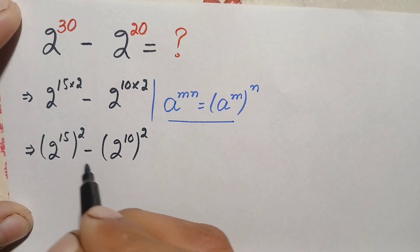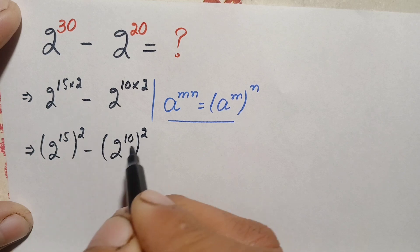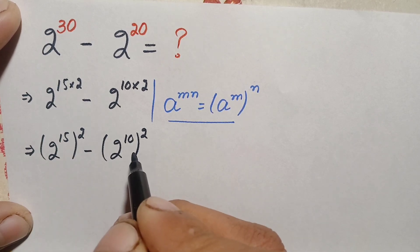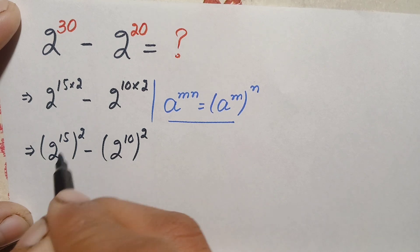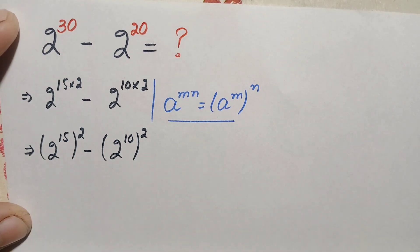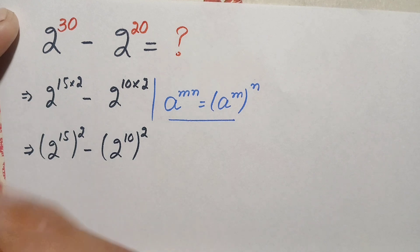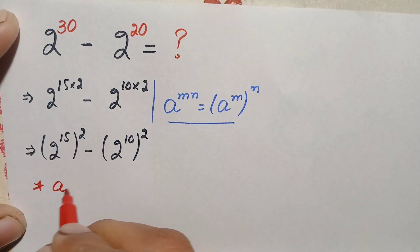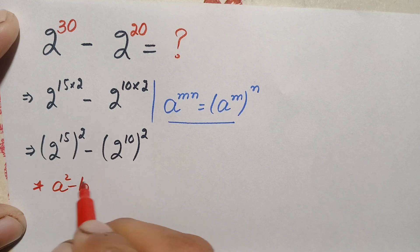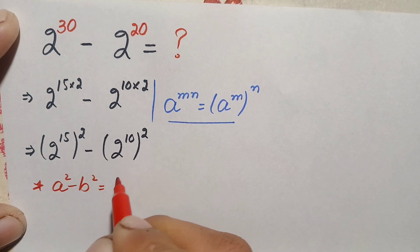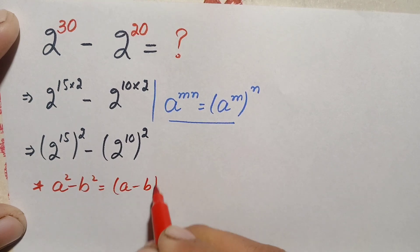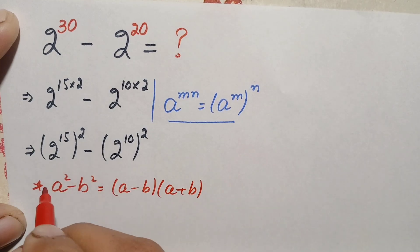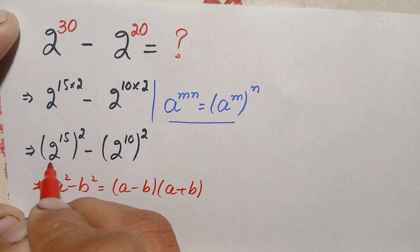Now both terms are in square form, so this expression is in the form a squared minus b squared. We will use the algebraic identity: a squared minus b squared equals a minus b times a plus b.